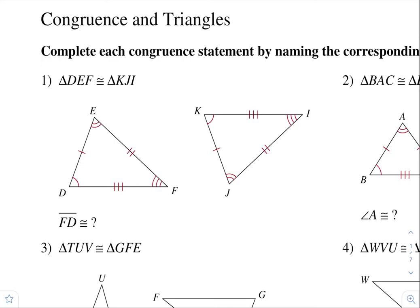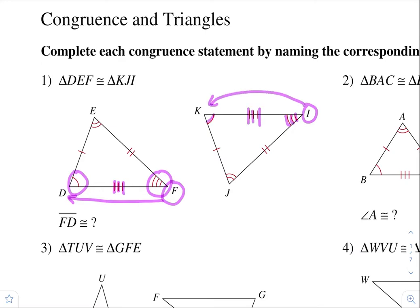It says, what is FD congruent to? Notice that FD line segment starts there and goes there. It has the three tick mark angle, crosses the three tick mark side, and the one arc. For the other triangle, it needs to be the same. Here is where the three arcs are, and it goes to the one arc, crossing the three tick mark side. So this one's congruent to IK.